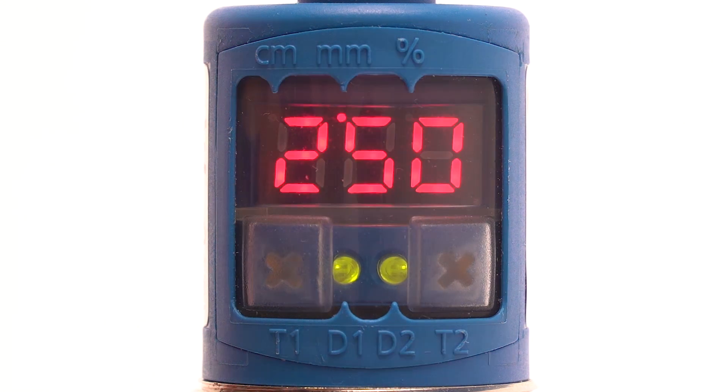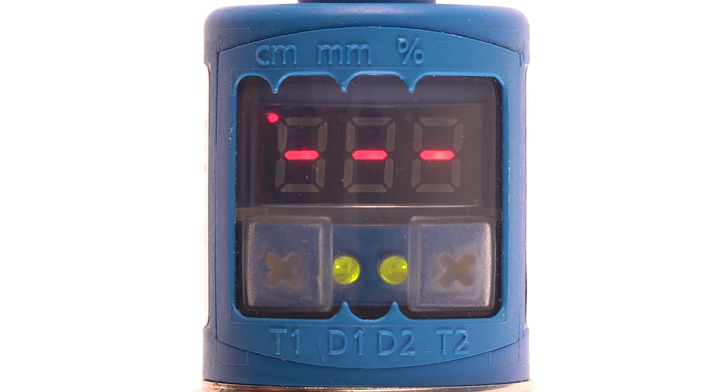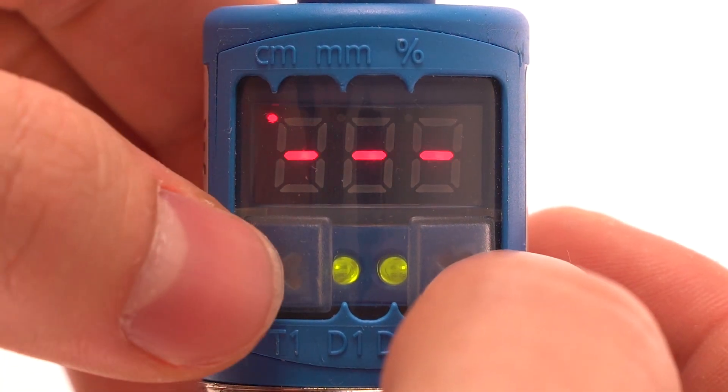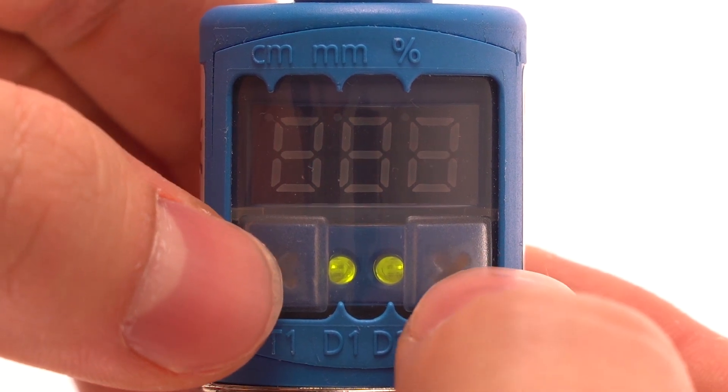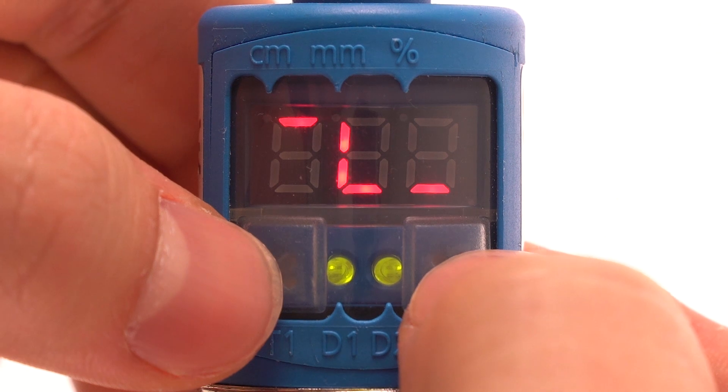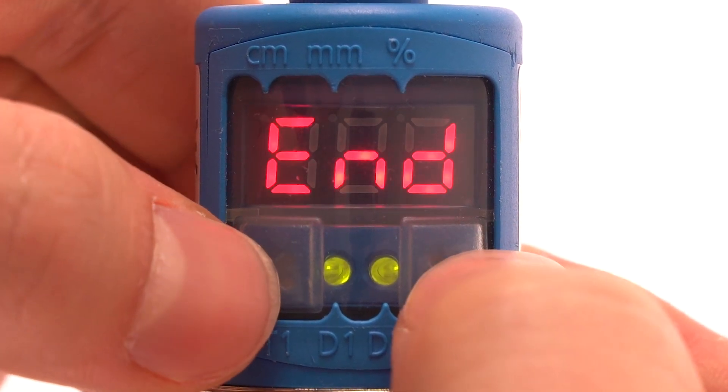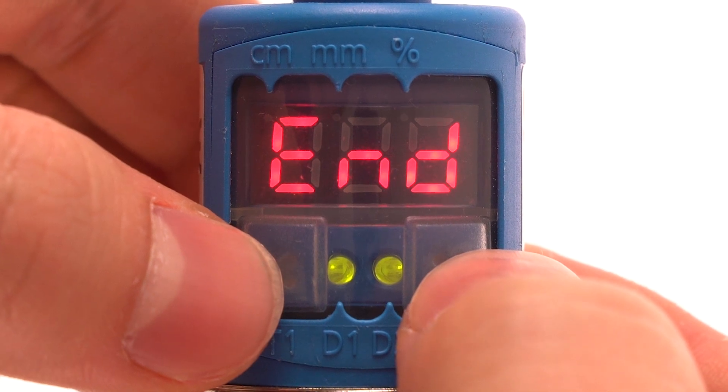Now simultaneously press T1 and T2. Three dashes appears on the display. For a simple switching point, simultaneously press T1 and T2. Select the normally closed or normally open contact. Simultaneously press T1 and T2 until end appears.